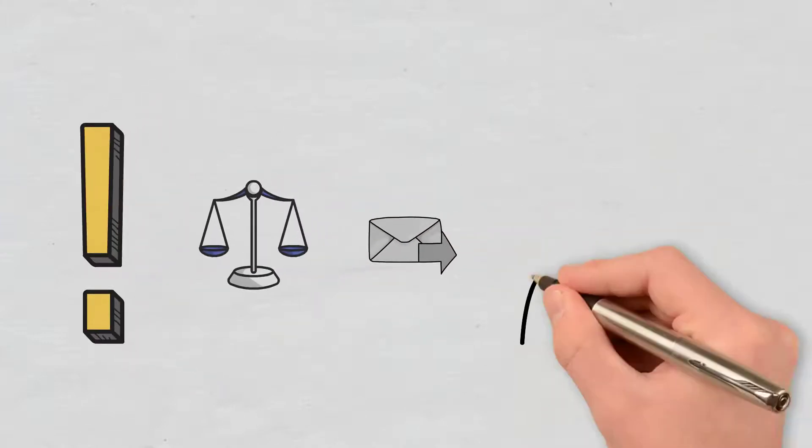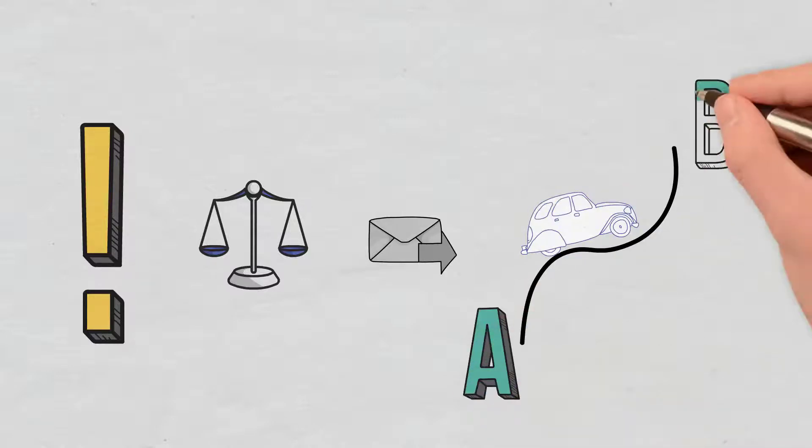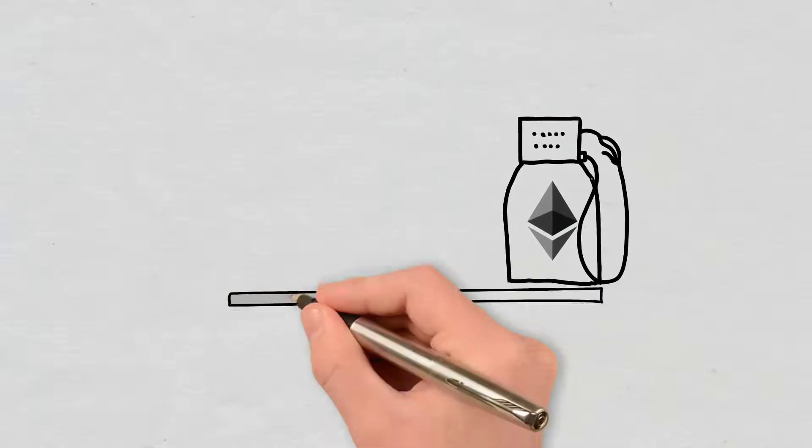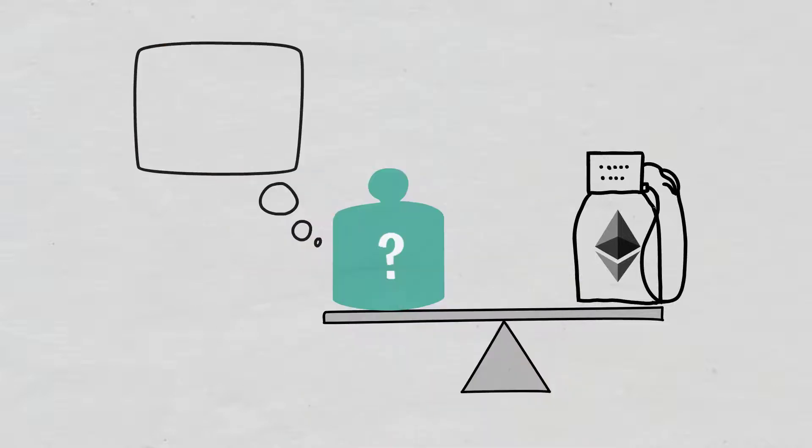To draw an analogy, we could think of it as the fuel needed for a car to travel from point A to point B. However, the amount of gas required to apply each condition within a smart contract will not tell us exactly how much we have to pay to meet these requirements.